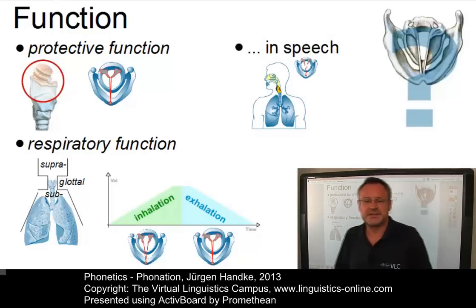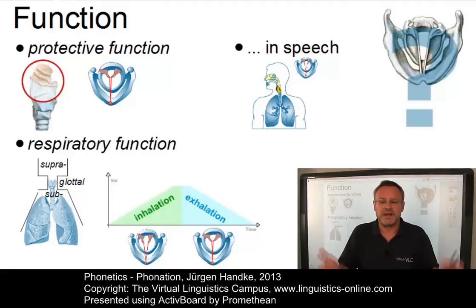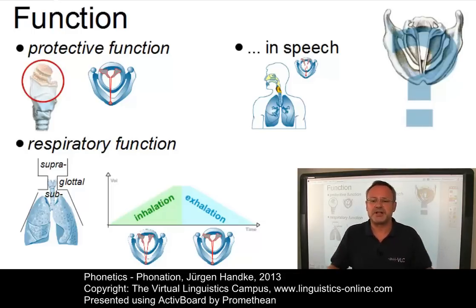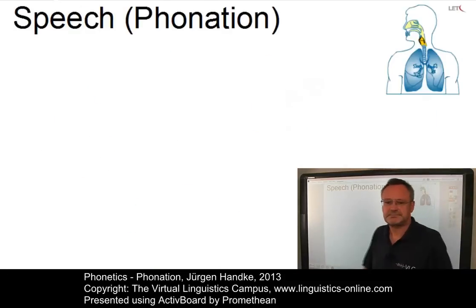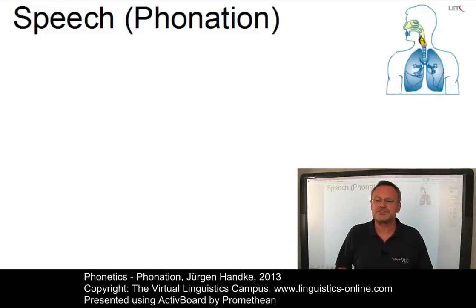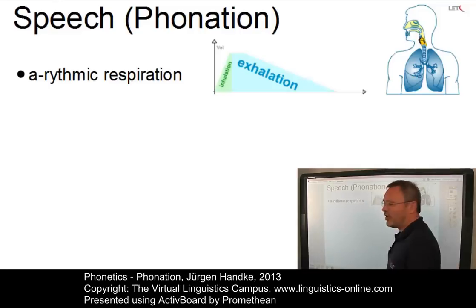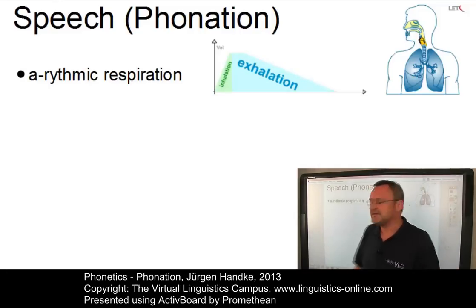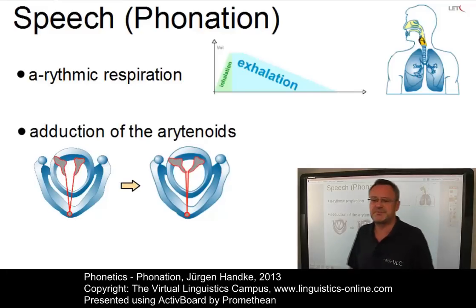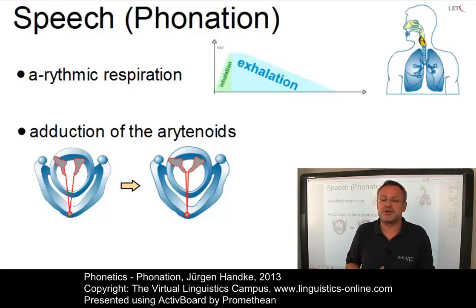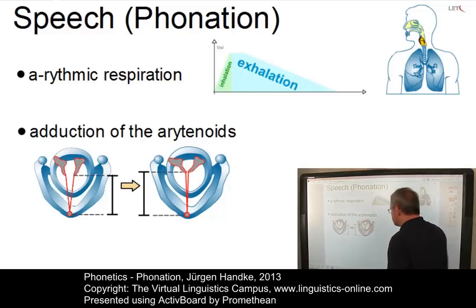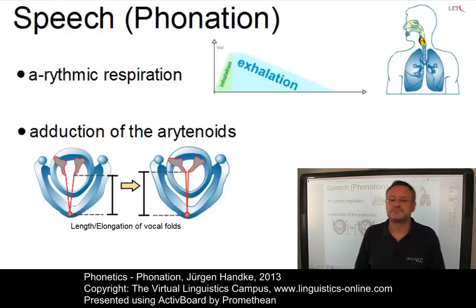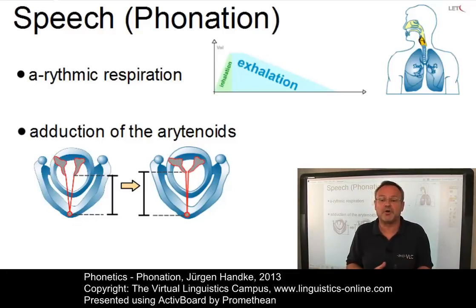The third function is the linguistic function in speech, where the larynx modifies the airflow from the lungs in such a way as to produce an acoustic signal. The result is phonation. Phonatory vibration of the vocal cords involves first the arrest of rhythmic respiration, then the adduction of the arytenoids with or without repositioning of the larynx and the initiation of voluntary expiration. Length and tension of the vocal cords during this process are slightly increased, and the laryngeal passage becomes occluded at the level of the glottis.